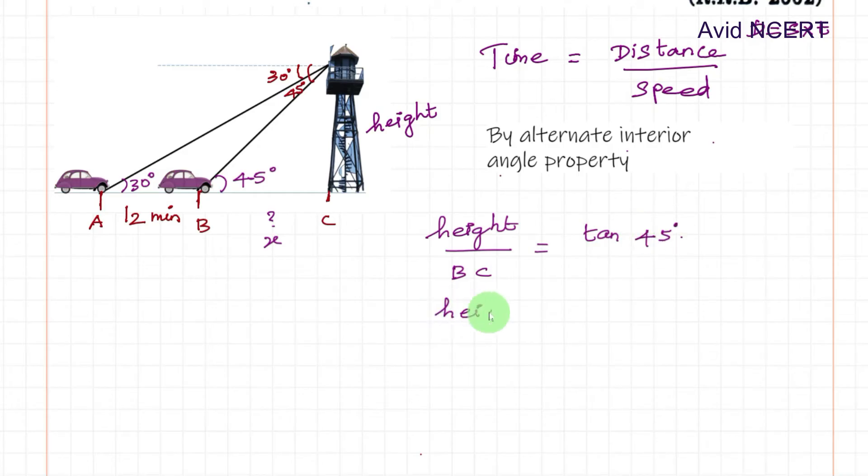Tan 45 is 1, so therefore height equals BC by cross multiplication, which means the value of the height and the value of BC is equal.